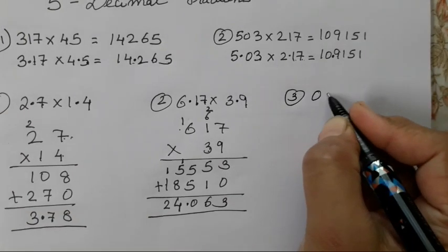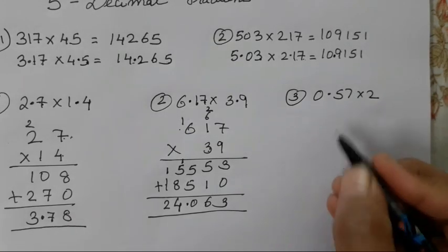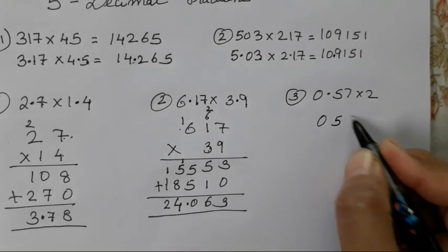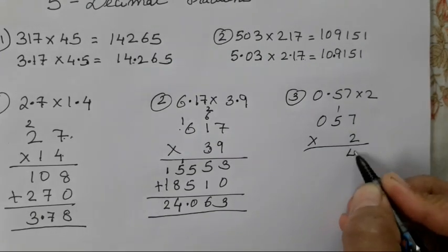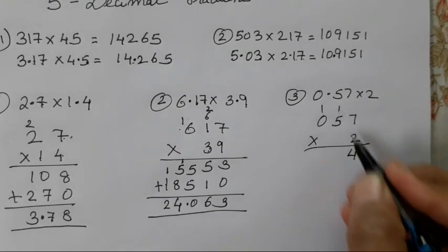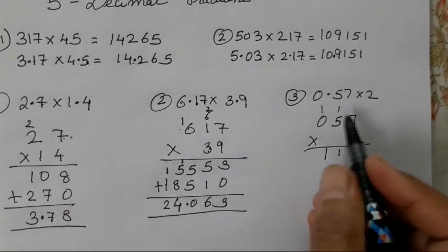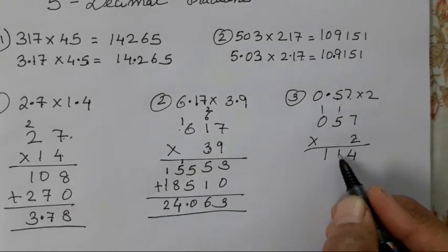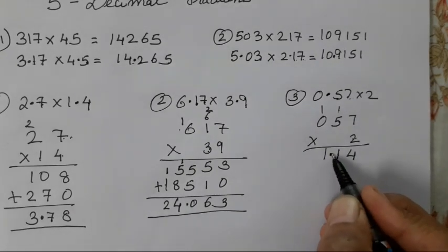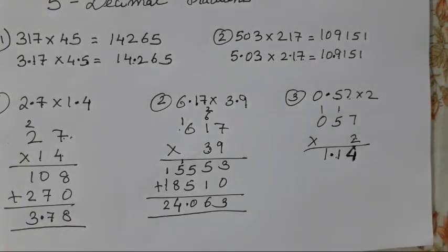The third sum is 0.57 into 2. Multiply 057 by 2: 7 twos are 14, 5 twos are 10 plus 1 is 11, carry 1. Result is 114. Now add the decimal point — after 2 digits from the right, since 0.57 has 2 digits after the decimal and 2 has none. So 2 plus 0 equals 2. Count 1 and 2 from the right: the answer is 1.14. Is it clear, children? It's very easy.